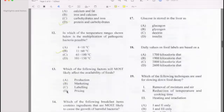Let's go to number 13: Which of the following factors most likely affect the availability of food? Production.